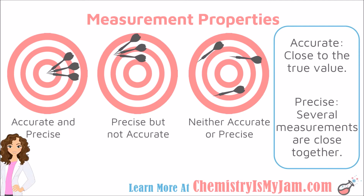The dartboard in the center would be considered precise but not accurate. The three darts hit the same place, but they did not hit the bullseye. The dartboard on the right, which is kind of random, is not accurate because they did not hit the bullseye, and not precise because the darts did not hit a consistent location.